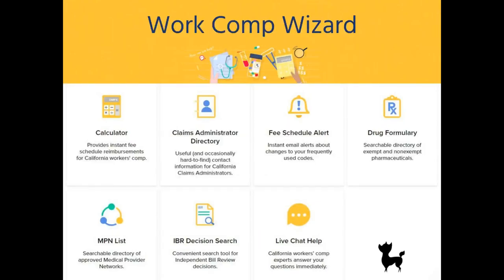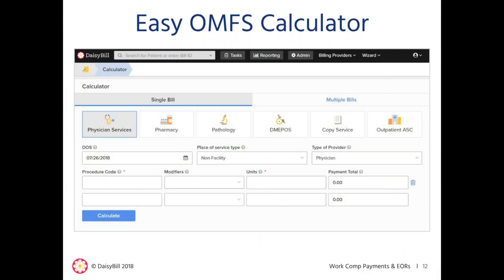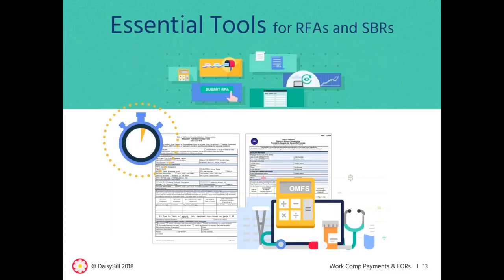For those who don't need the full scope of our billing software, we have the Work Comp Wizard. The wizard includes seven critical features to help California Workers' Comp professionals succeed. The wizard features the very popular OMFS calculator, which instantly calculates reimbursements for six medical fee schedules, as well as the medical legal fee schedule. And finally, we offer our Essential Tools. Essential Tools subscribers can create second review appeals and requests for authorization in seconds, and can also use our task management system to track payer responses to RFAs and SBRs.